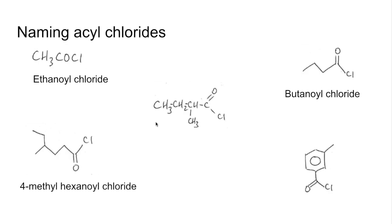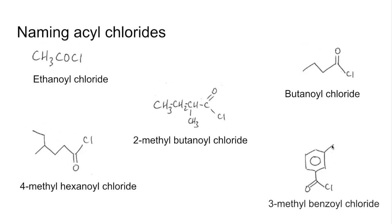Similar one here: longest chain 1, 2, 3, 4, so this is 2-methylbutanoyl chloride. And we'll finish with this aromatic one. So it's benzoyl chloride, but we've got a methyl group at carbon number 3, so: 3-methylbenzoyl chloride.